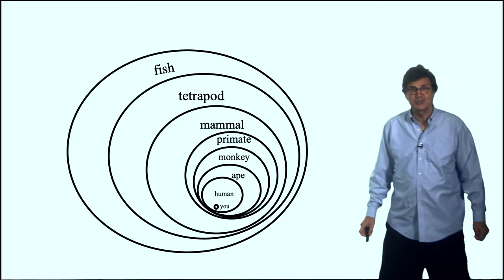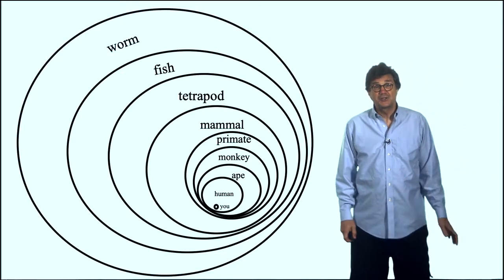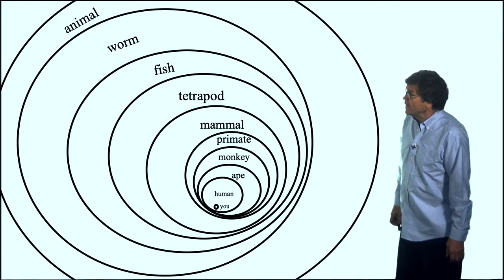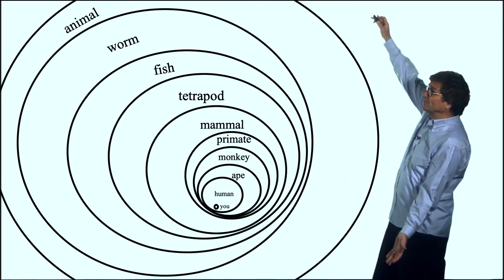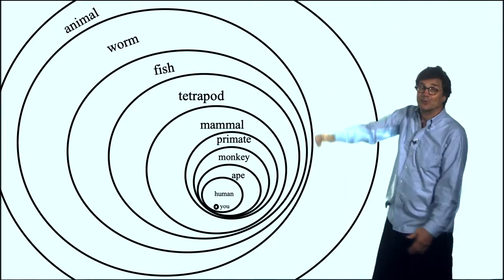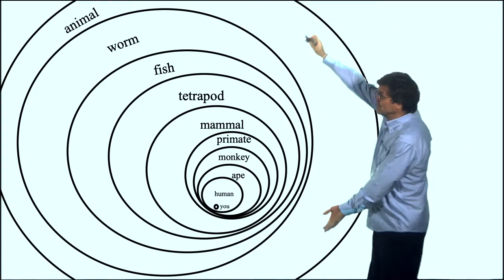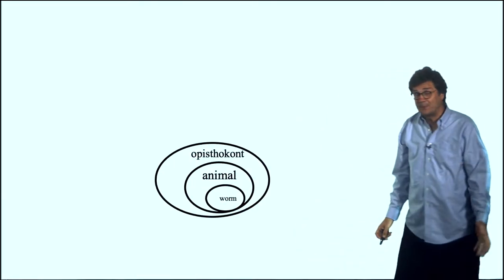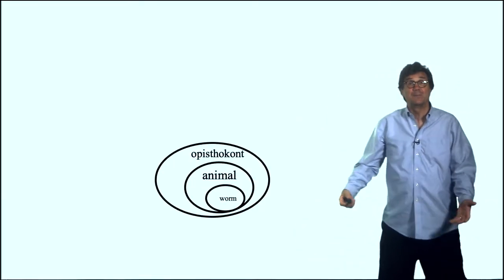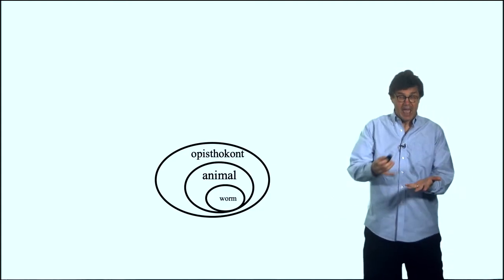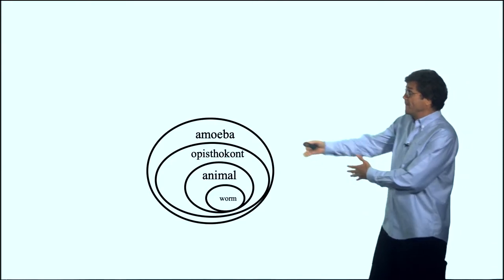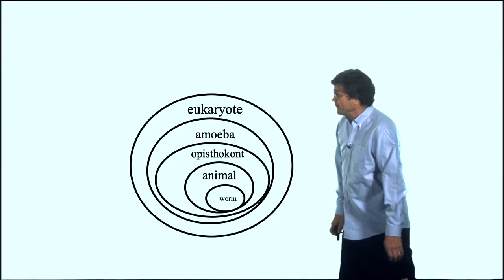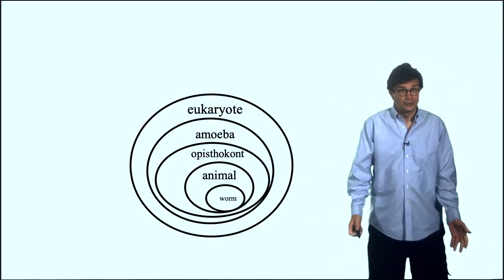Tetrapods evolved from fish. Fish evolved from worms, and worms are a type of animal. You're an epistakon — epistakons include animals and fungi. And epistakons evolved from amoeba. Amoeba is a eukaryote, so you're a eukaryote. Eukaryotes evolved from archaea, with a little help from bacteria.